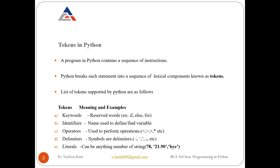First, I'm going to cover tokens in Python. Those who connected with me in the last class already know I explained this concept thoroughly. What are tokens? A program in any language is a sequence of instructions — a set or collection of instructions. When you write instructions, you are writing a program. Now, if you provide code of five lines, Python will take each statement of your code and break it into smaller sub-parts.